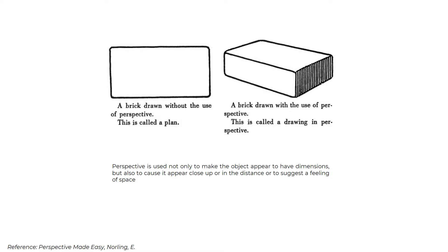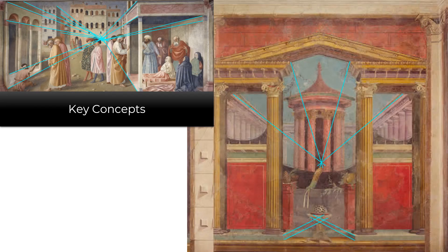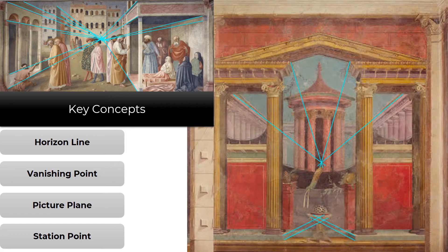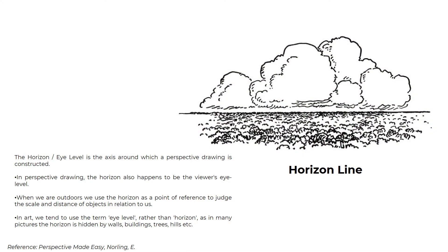Perspective is used not only to make the object appear to have dimensions, but also to cause it to appear close up or in distance, or to suggest a feeling of space. The key concepts of perspective are the horizon line, the vanishing point, the picture plane, and the station point. The horizon or eye level is the axis around which a perspective drawing is constructed. In perspective drawing, the horizon also happens to be the viewer's eye level. When outdoors, we use the horizon as a point of reference to judge the scale and distance of objects in relation to us.